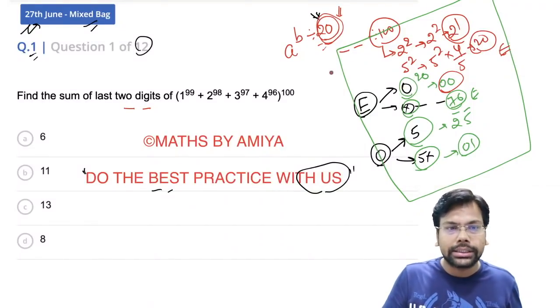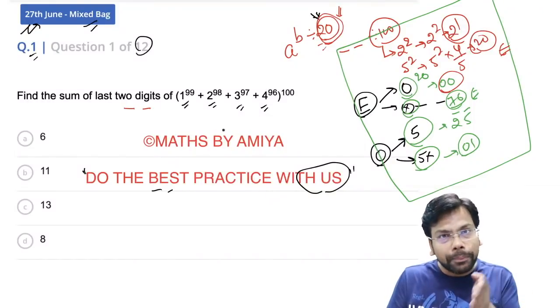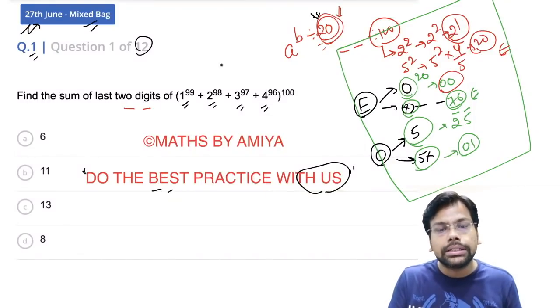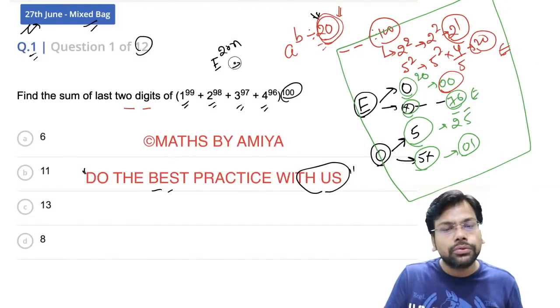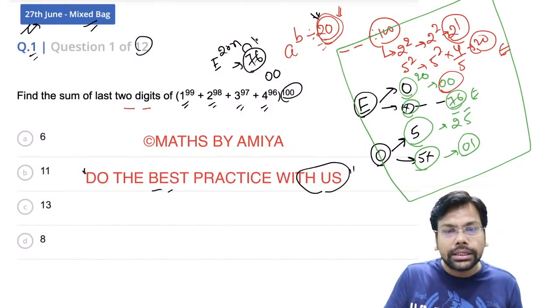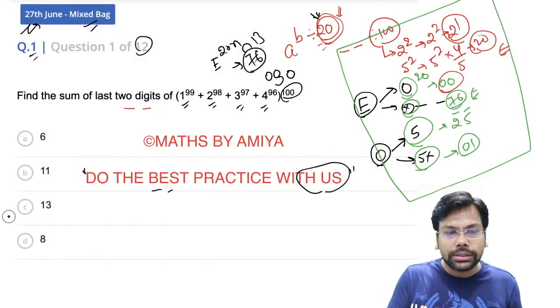This one is nothing but odd, this one is even, this one is odd, this one is even. Odd plus even plus odd plus even is nothing but even. And power is a multiple of 20. So this would end with 76 or 00. Sum of digits is either 13 or 0, but 0 is not among the options. So the answer is nothing but 13.